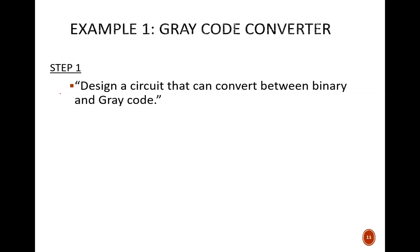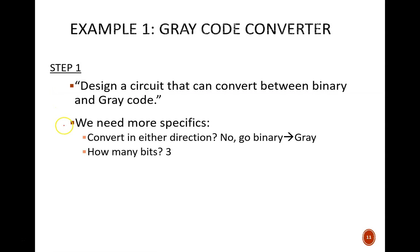Pause the video and try to think of two important questions to ask. One question that will keep coming up is, how many bits? In this case, the requirement is 3 bits. The other big question here is, does the circuit need the capability to convert in either direction? We'll just go in one direction. Given binary, convert it to gray code.